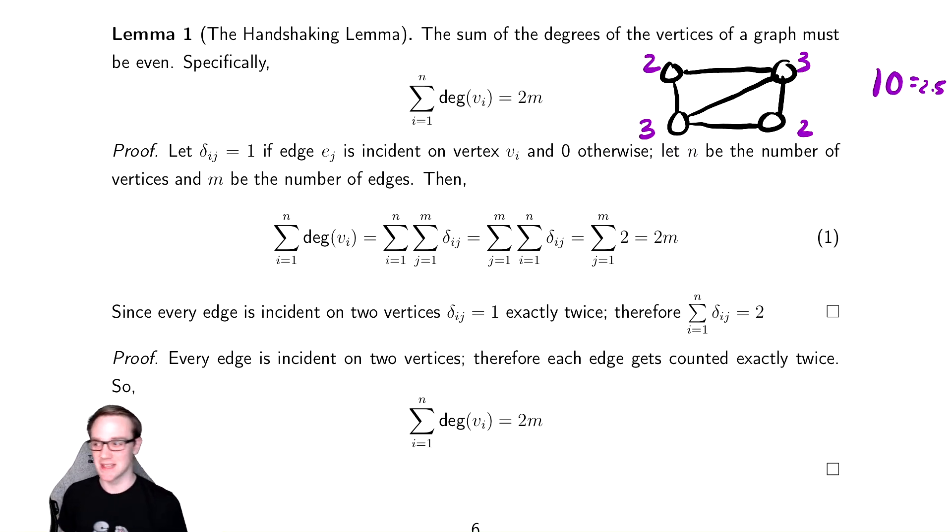Why on earth would that always be the case? The bottom proof says this in sort of quick notation, which says that every single edge gets counted twice. Of course it does. This top edge here connects two vertices. It gets counted twice.